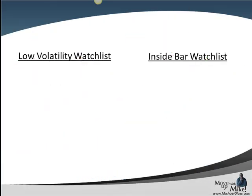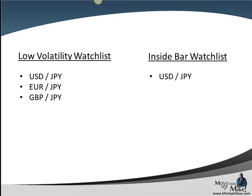As we come to today's watchlist, we always start off with the one-hour timeframe to come up with our low-volatility watchlist using Bollinger Bands. For that, we'll be watching the dollar-yen, the euro-yen, and the pound-yen for our inside bar watchlist, which is looking at today's range as compared with Tuesday. And for the inside bar watchlist we'll also be watching the dollar-yen and the dollar-franc.